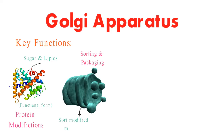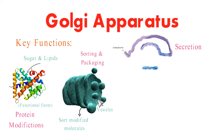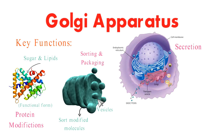It sorts the modified molecules and packages them into vesicles that bud off and move to various cellular destinations. The Golgi is also responsible for producing secretory vesicles that contain molecules meant for export out of the cell.